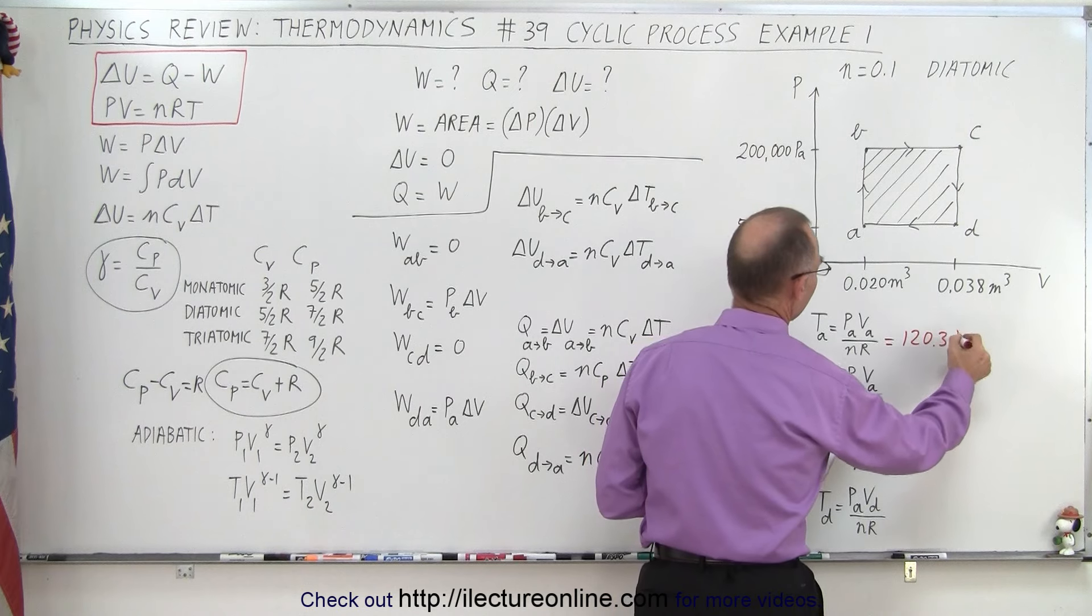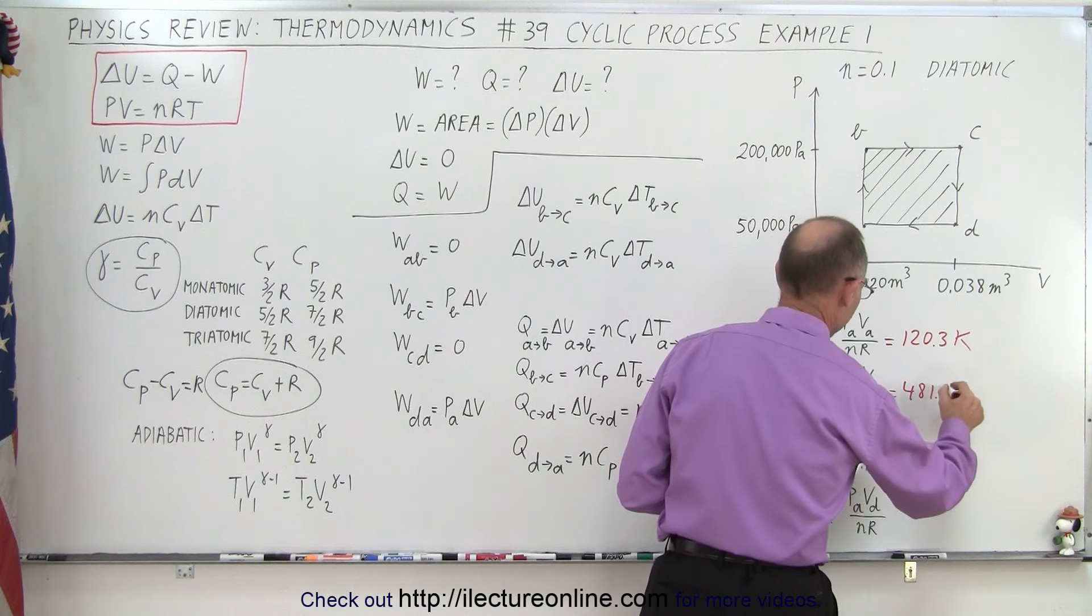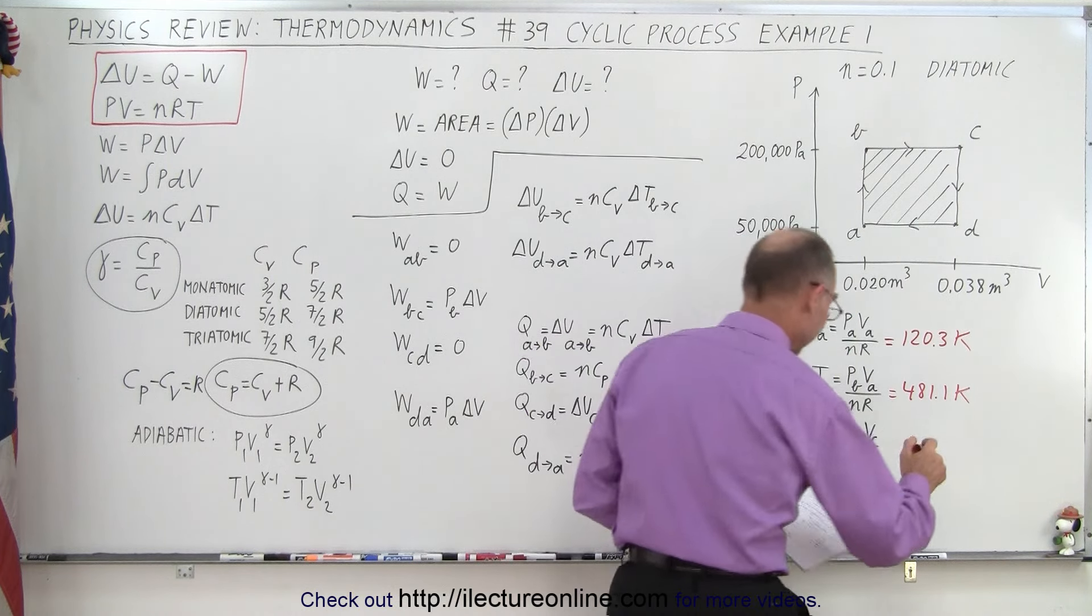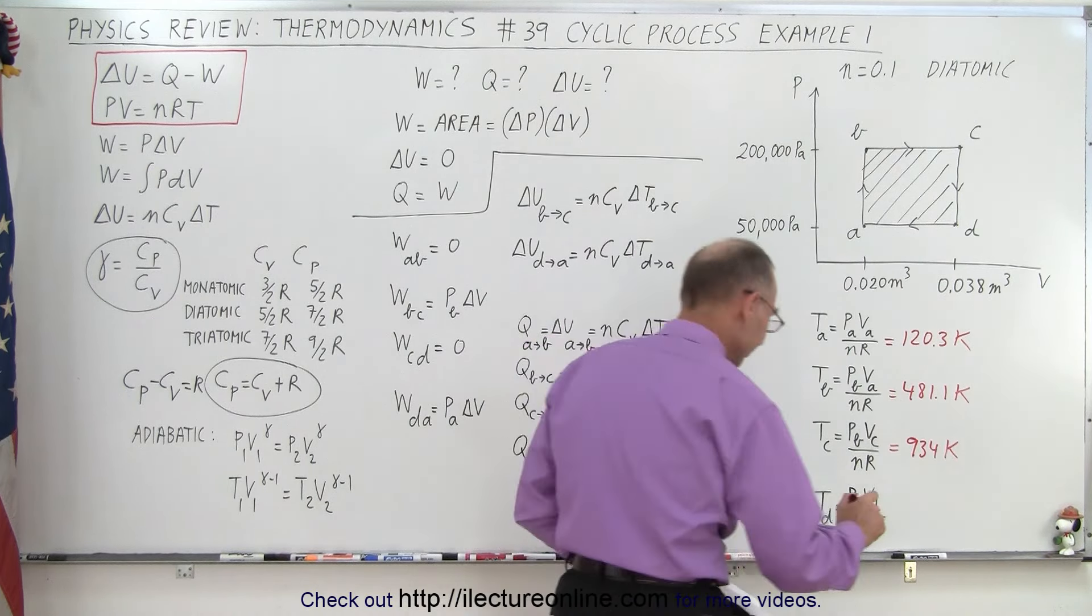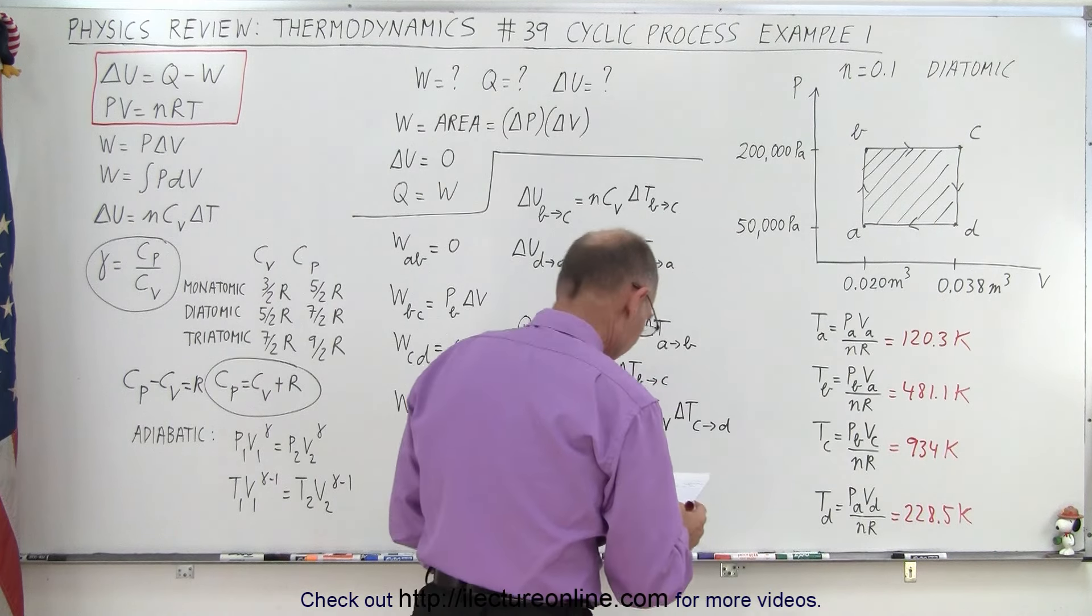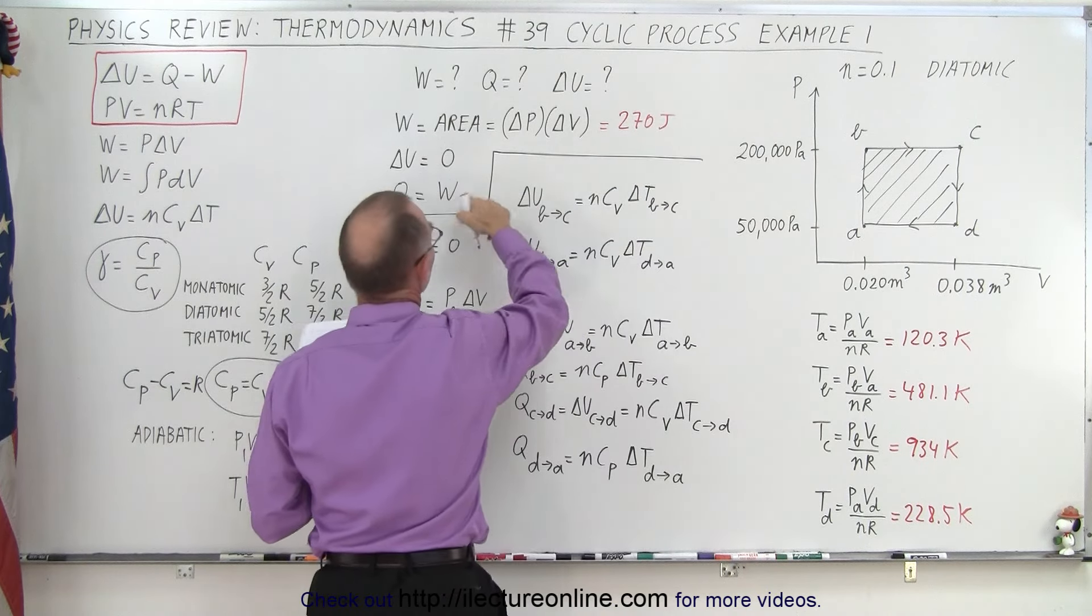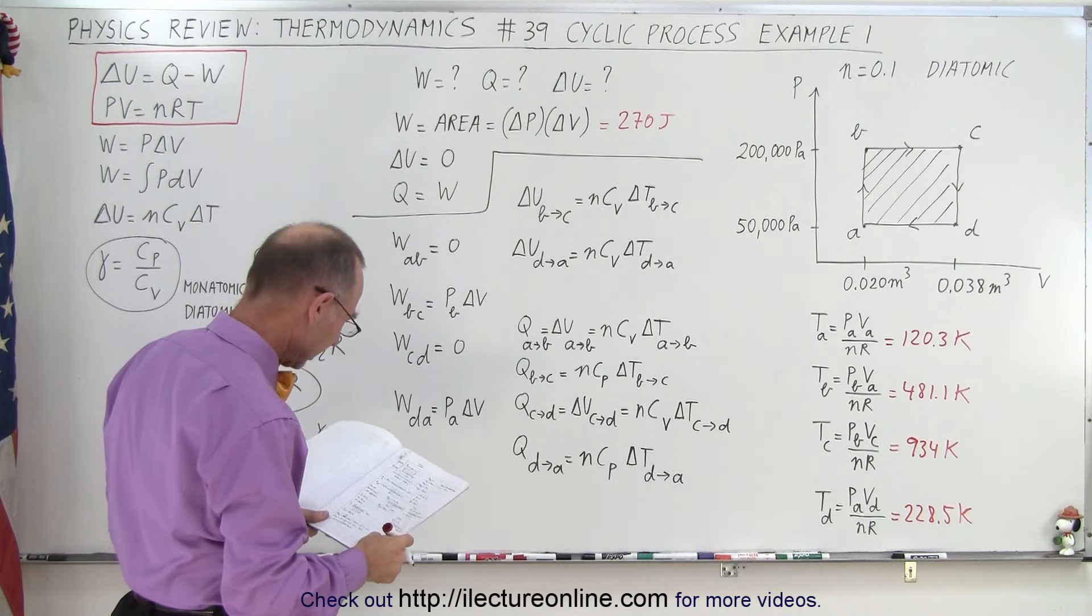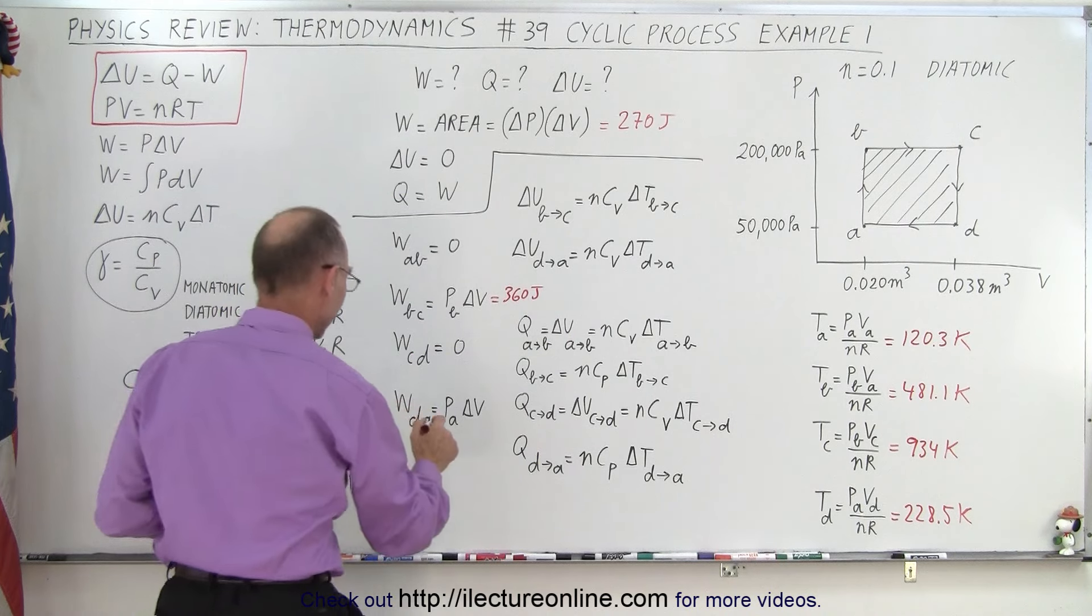Okay, so that's 120.3 K. Temperature at B, 481.1. Temperature at C, 934, if I can read my writing. And temperature at D, 228.5. Work done in the whole cycle is 270 joules. And heat added is the same as that. Work done from B to C, 360 joules. And work done, that would be minus 90 joules.